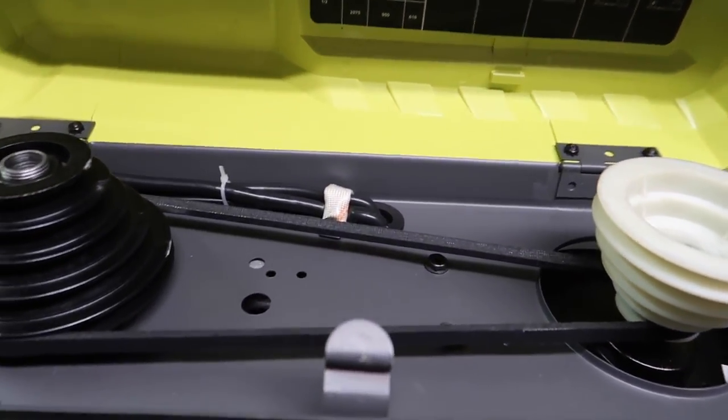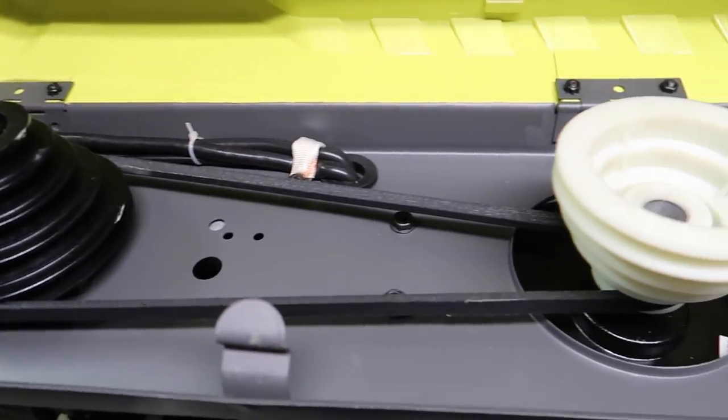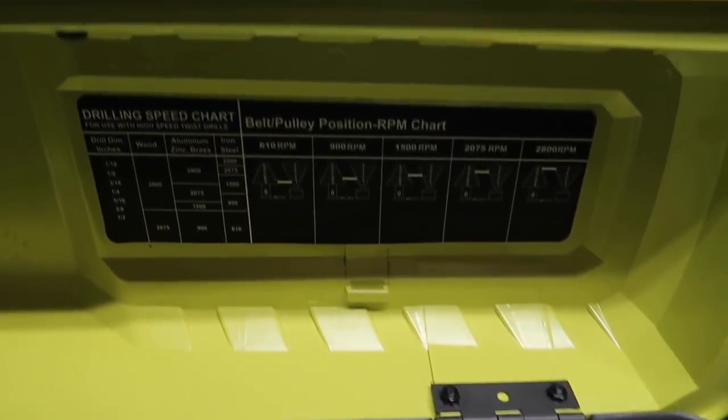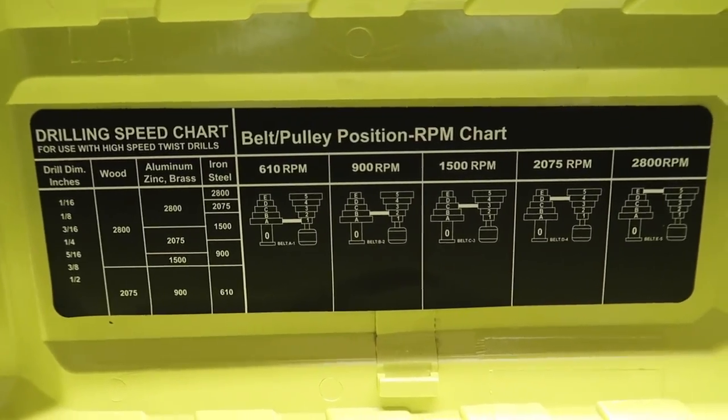When you open up this plastic cover, you'll find your belt assembly as well as your drill speed and belt pulley position chart.